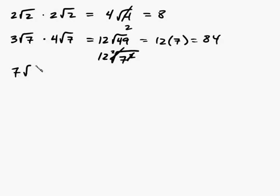How about this? 7 rad x times 2 rad y. Again, multiply the coefficients. 7 and 2 is 14. And rad x times rad y is radical xy.